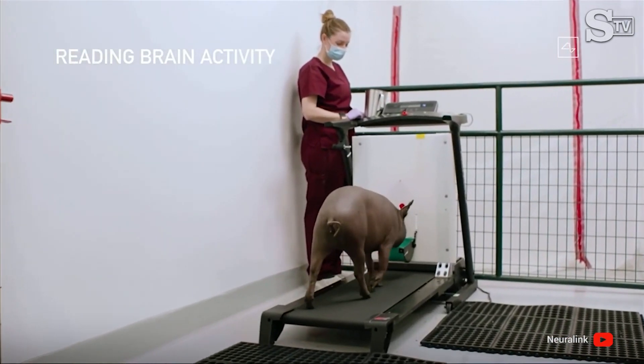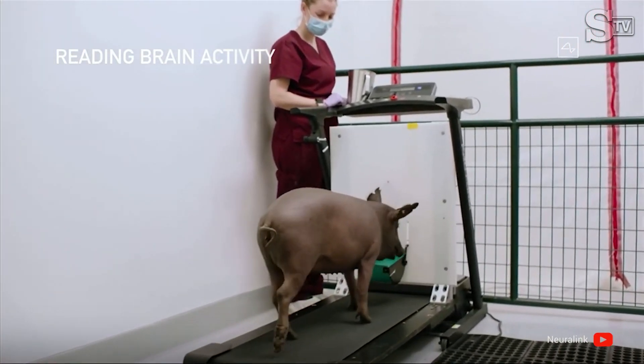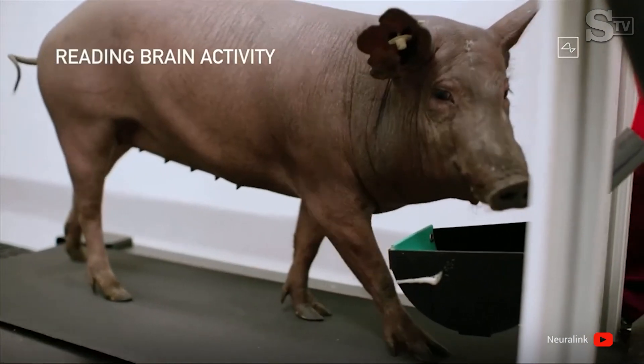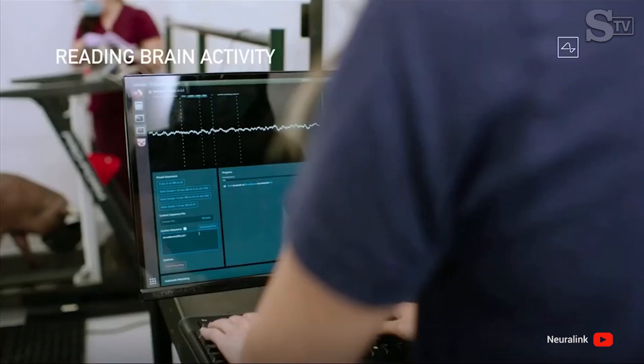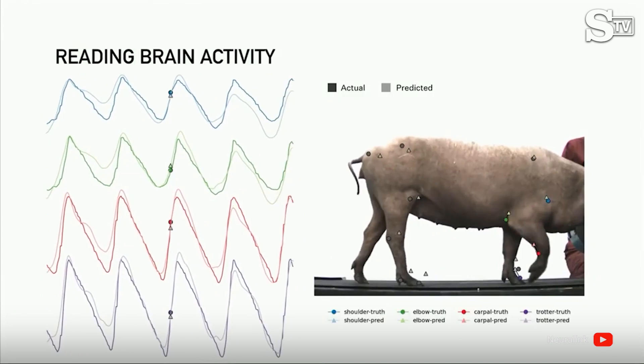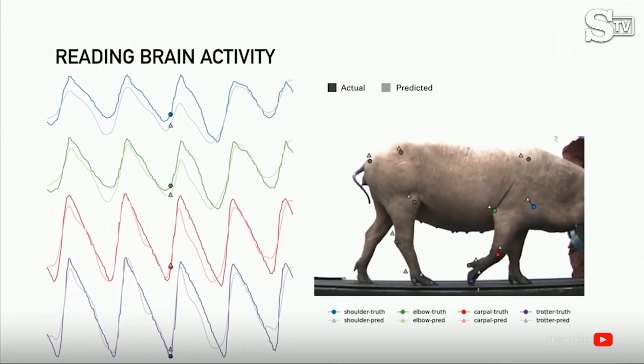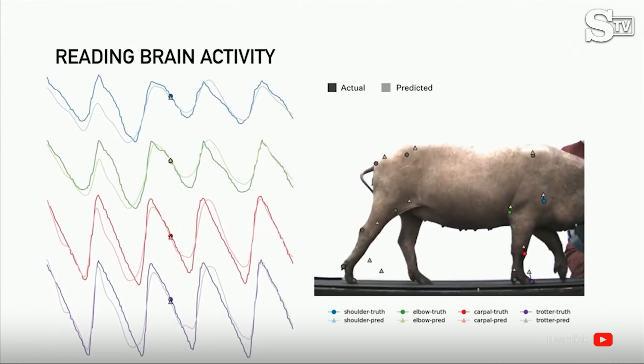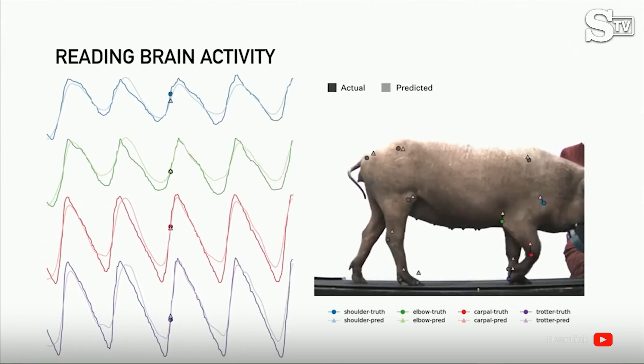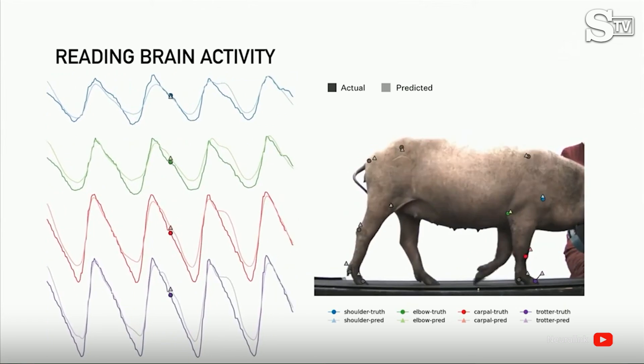So in terms of additional brain reading activity, when we have, say, one of our pigs on a treadmill - a pig on a treadmill, it's a funny concept, really - and we take the readings from the neurons, and we try to predict the position of the joints.